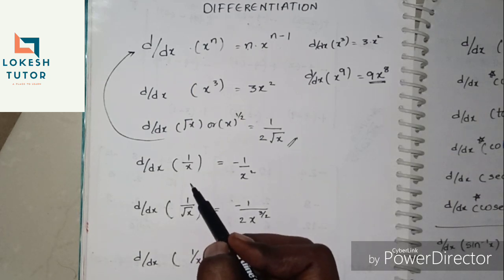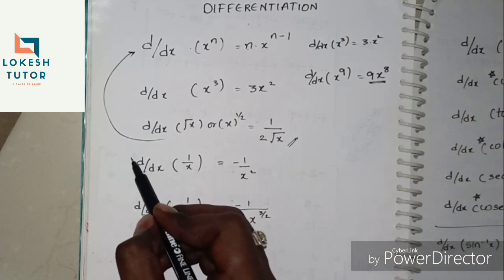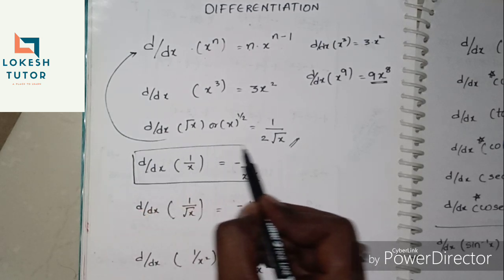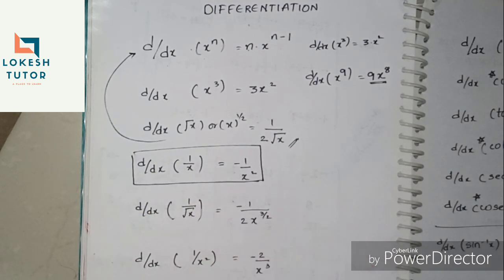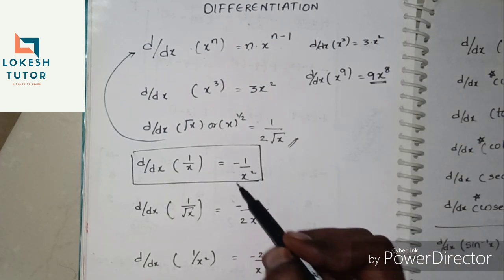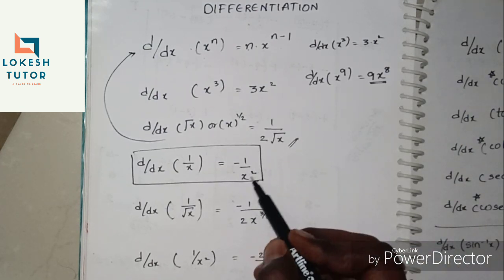d/dx of 1/x is minus 1/x². This is very, very important. If you have a function in the denominator, the result will have a minus sign. This applies to 1/x, 1/2x, 3/x, 5/x², 10/x³, 11/9x³ — whenever the variable is in the denominator, the sign is negative.